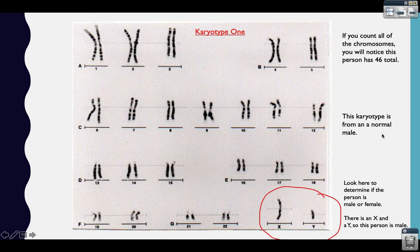This person could still have a gene disorder; we just can't diagnose it from here. Be careful if you decide to count by pairs, because sometimes there will be an extra chromosome or a missing chromosome — so look at each set carefully as you count.